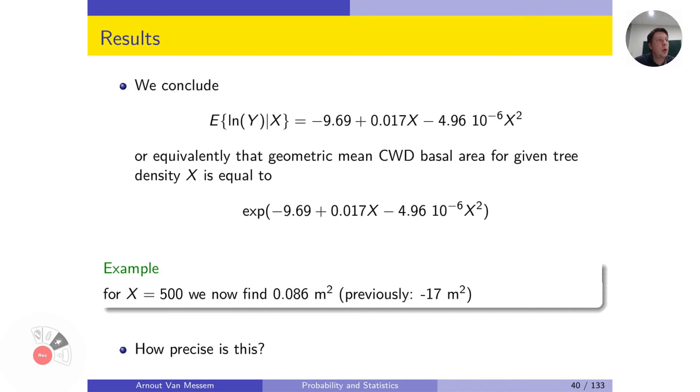So finally, we conclude that the model looks like this. So the expected value of the logarithm of y is minus 9.69 plus 0.017 times x, the tree density, minus 4.96 times 10 to the power minus 6 times x squared. So this is still in the logarithm of y, so we have to do a back transformation by using the exponential.